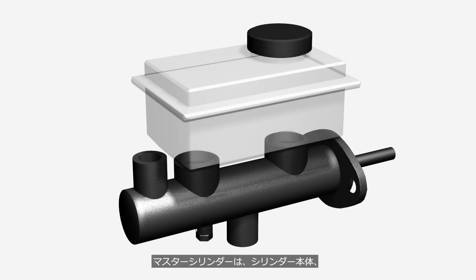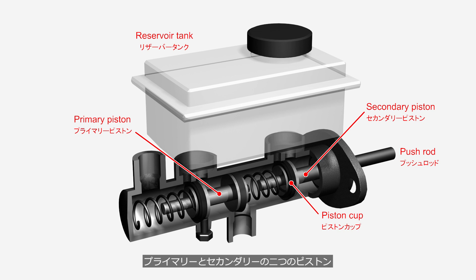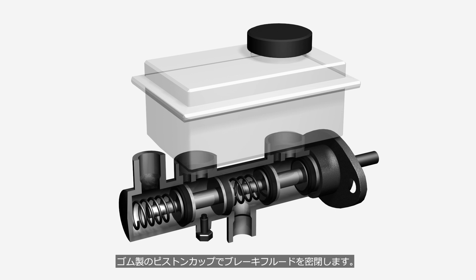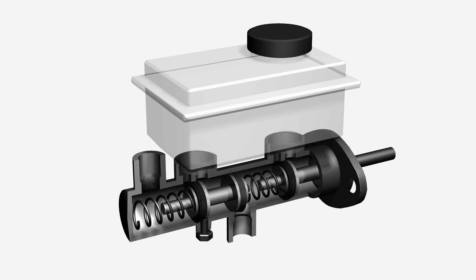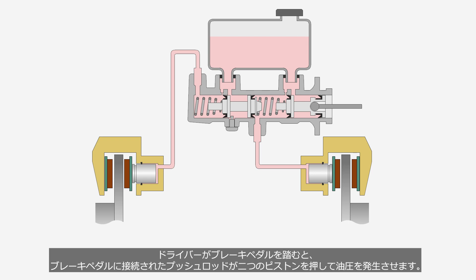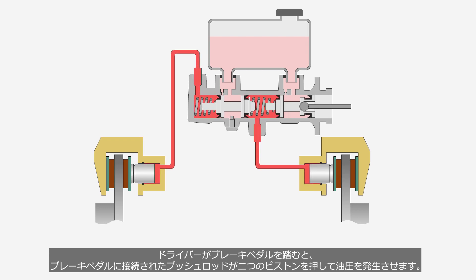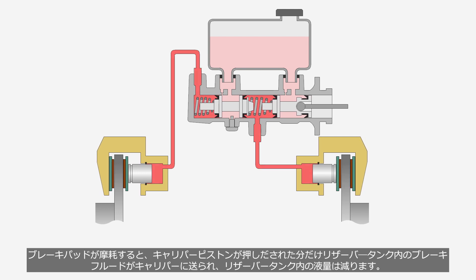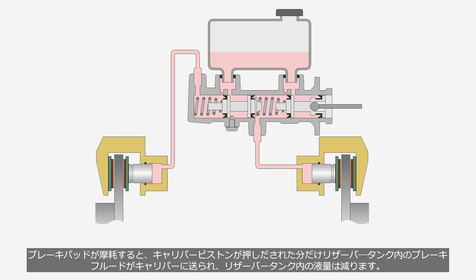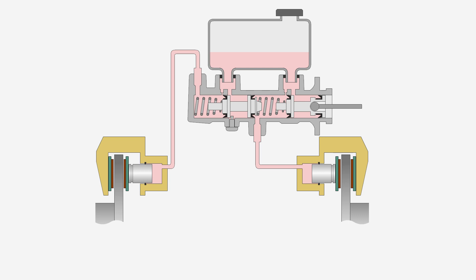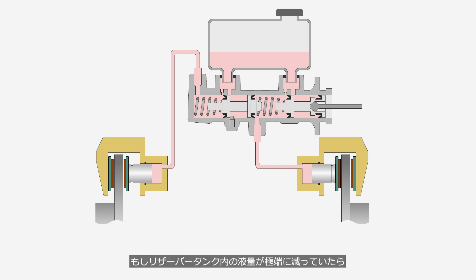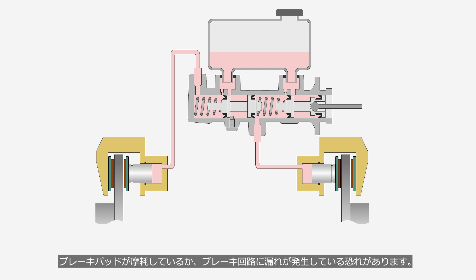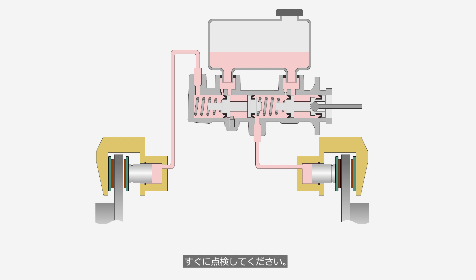The master cylinder consists of a cylinder body, two pistons — primary and secondary — a reservoir tank, and a push rod. It is sealed with brake fluid by piston cups made of rubber. When the driver depresses the brake pedal, the push rod pushes the two pistons to generate hydraulic pressure. As the brake pads wear, brake fluid from the reservoir tank is sent to the caliper to compensate for the displaced caliper piston, causing the fluid level in the reservoir tank to decrease. If the fluid level is extremely low, it could indicate that the brake pads are worn or there is a leak in the brake system — please inspect it immediately.